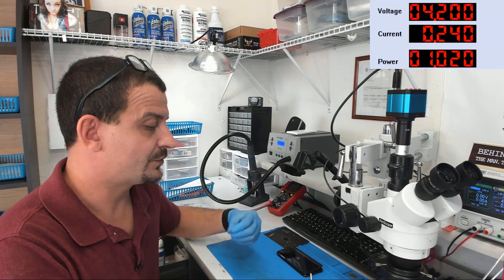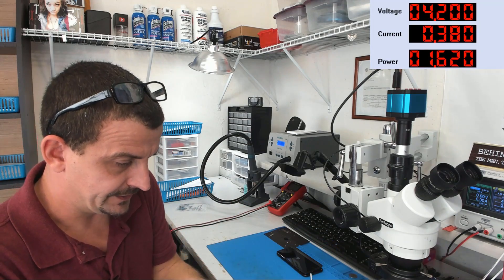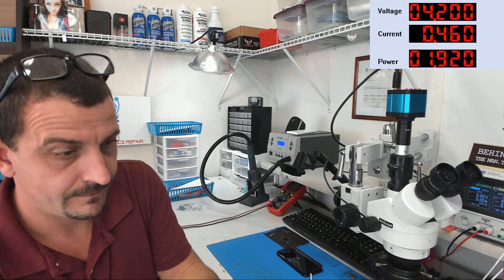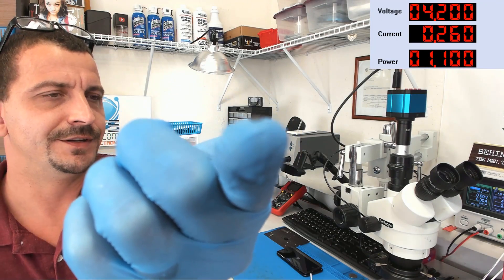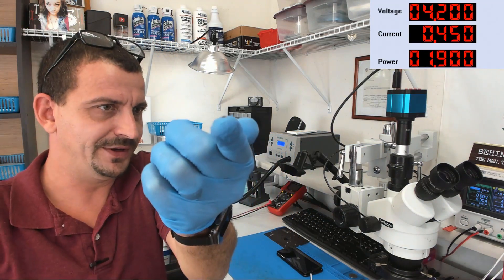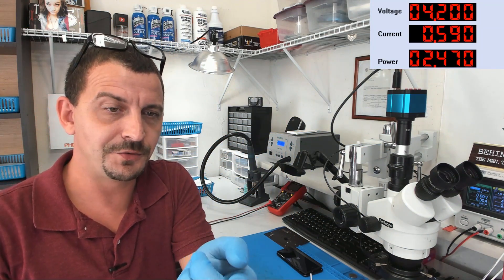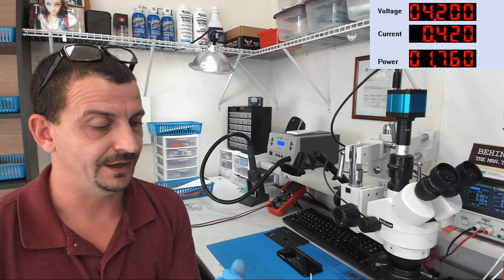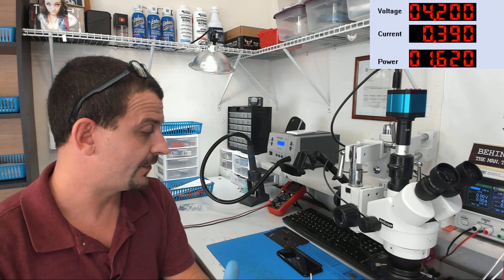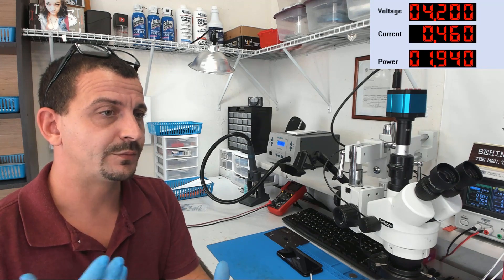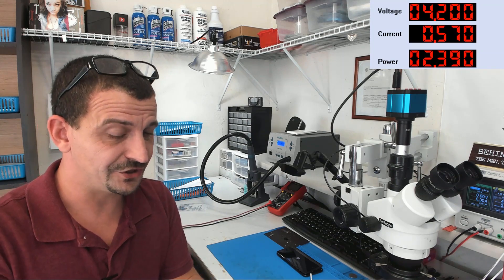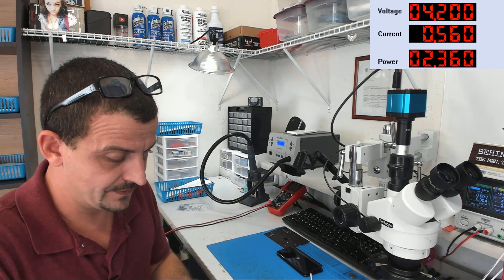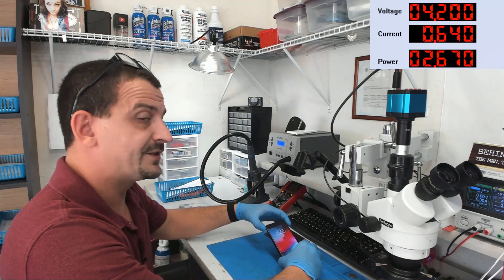So by swapping out the TriStar IC, this little bitty IC was drawing 200 milliamps and it's got a fault inside. Now if we were to peck around this thing with a multimeter, we could probably figure out what line is shorted, but I just, I have never felt that that was necessary. This phone is up and running.